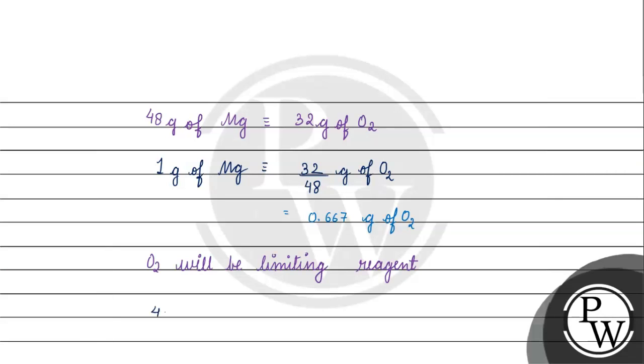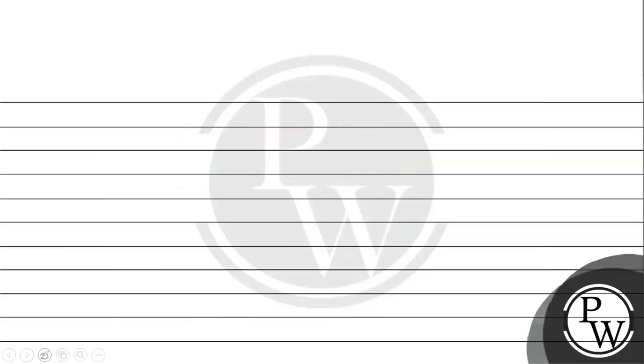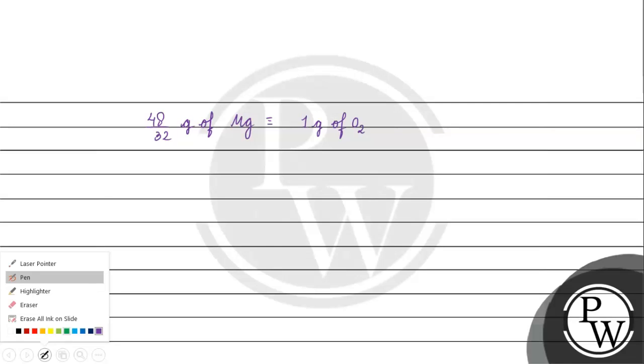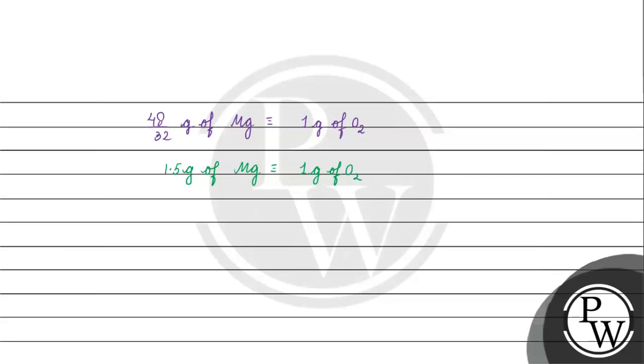Now we have 48 grams of magnesium react with 32 grams of oxygen. So 1 gram of oxygen will react with 48 by 32 grams of magnesium. So 1 gram of oxygen will use 1.5 grams of magnesium.